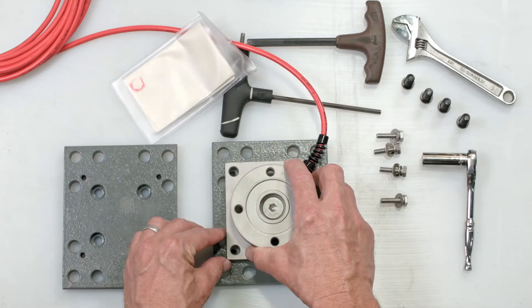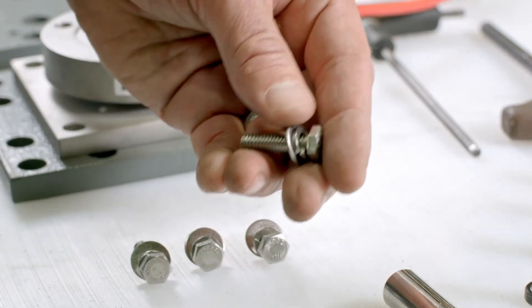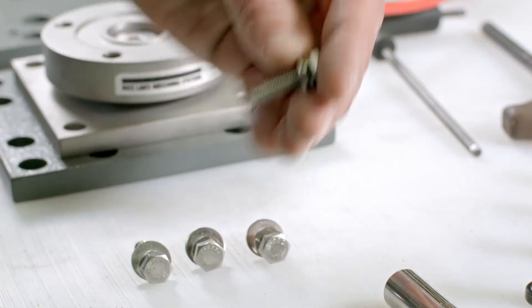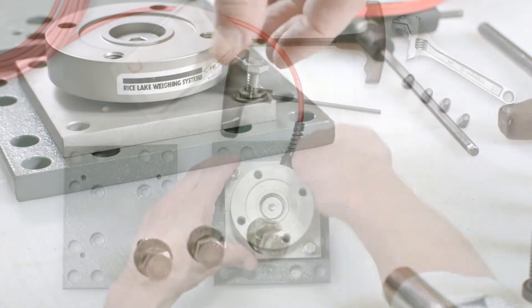Align the cell with the four small holes in one plate and use the hex bolts, washers, and lock washers to attach the cell base to the plate.